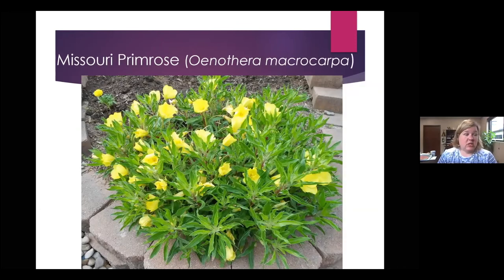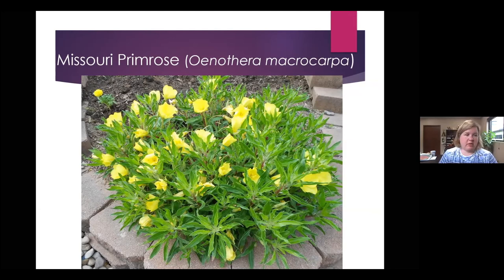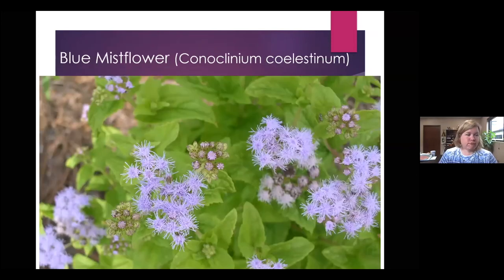Missouri primrose has huge flowers but doesn't get very tall — about a foot tall with about a foot and a half spread. Bloom time is May to August, a long period of time. It is also a larval food source for one of our native caterpillars. Bloom mist flower blooms late July to October, tolerates partial shade, and is one of our native plants.